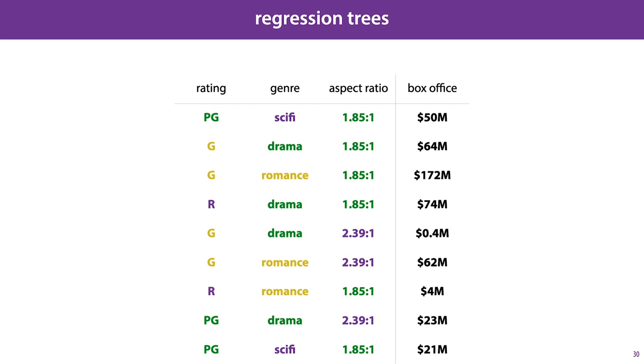We've seen decision trees that use numerical features, but what happens if our target label is numerical? In this case, the model is called a regression tree, and we can follow the same basic approach as we did for decision trees, but we have to answer a few questions first.